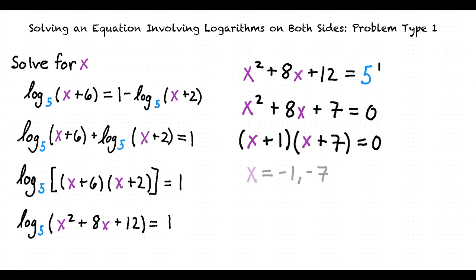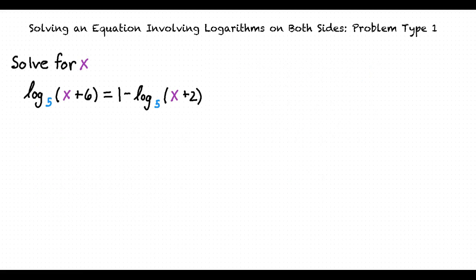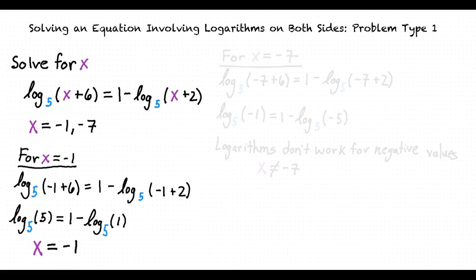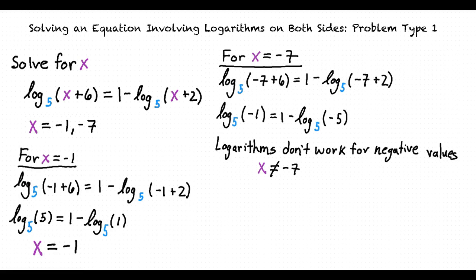So the zeros for this equation would be negative 1 and negative 7. However, we must check that our answers work in the original logarithmic equation. Substituting negative 1 for x, we find that it does work. But substituting negative 7 for x, we find that this value does not work, because logarithms don't accept negative values. So our final answer is x equals negative 1.